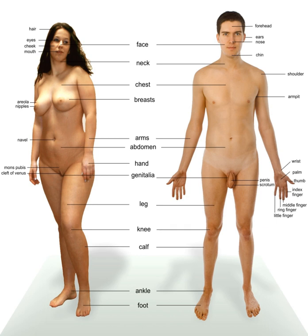Not all species share a common sex determination system. In most animals, including humans, sex is determined genetically, but in some species it can be determined due to social, environmental, or other factors. For example, Simothoa exigua changes sex depending on the number of females present in the vicinity.